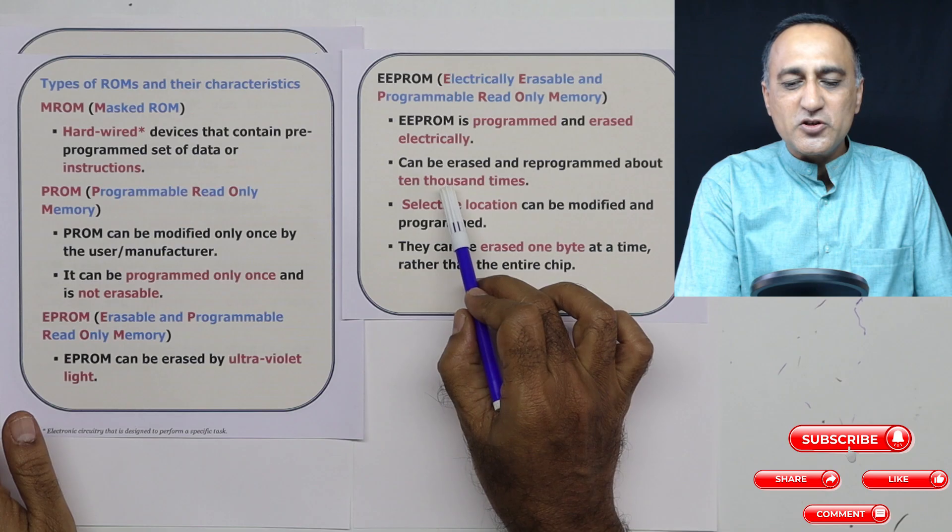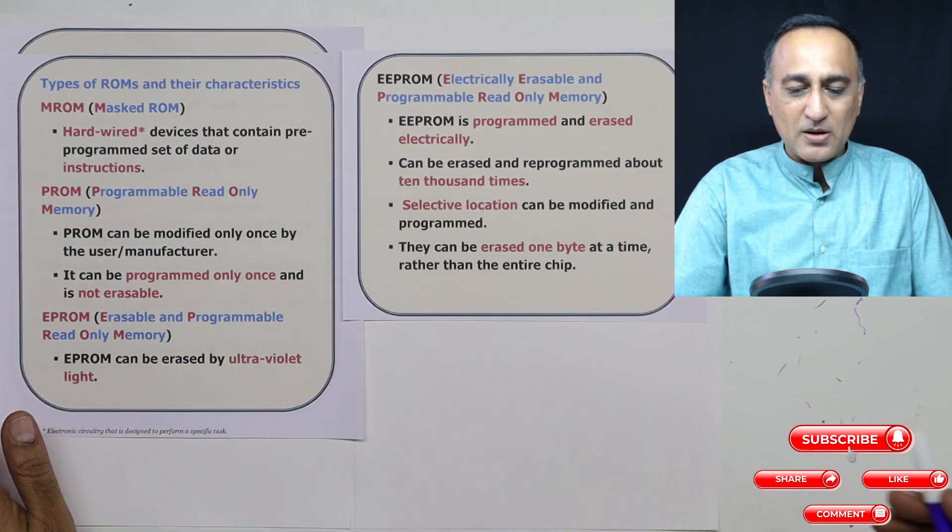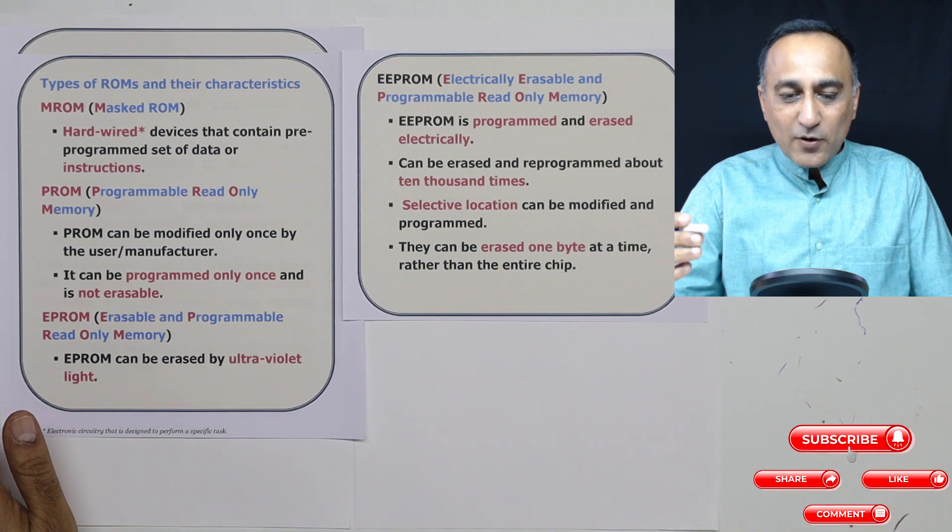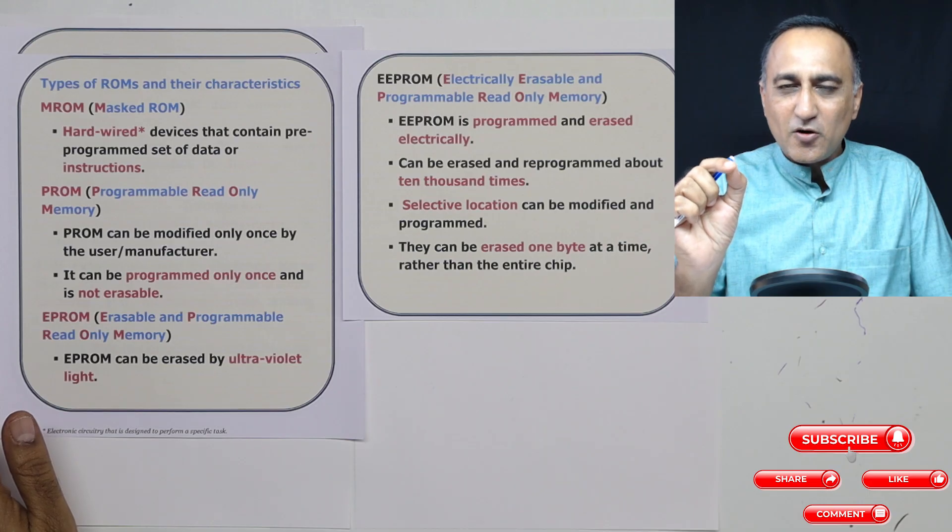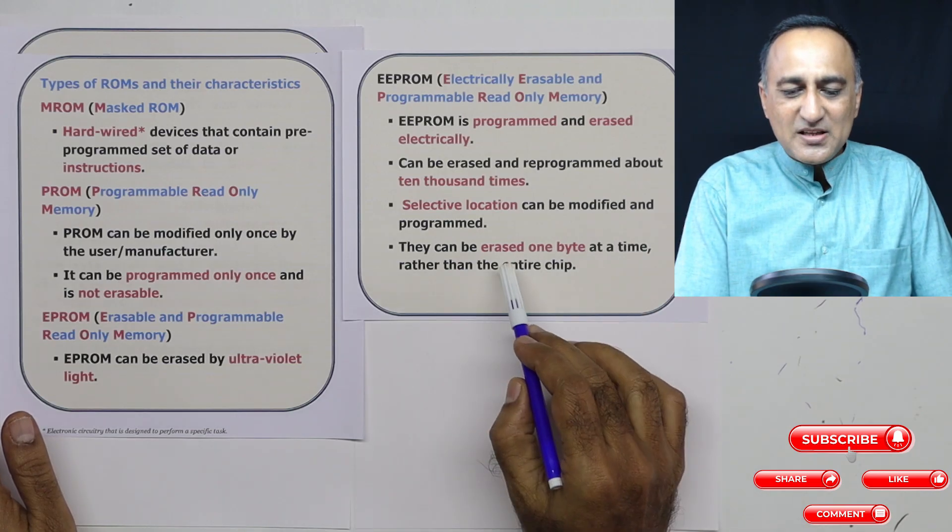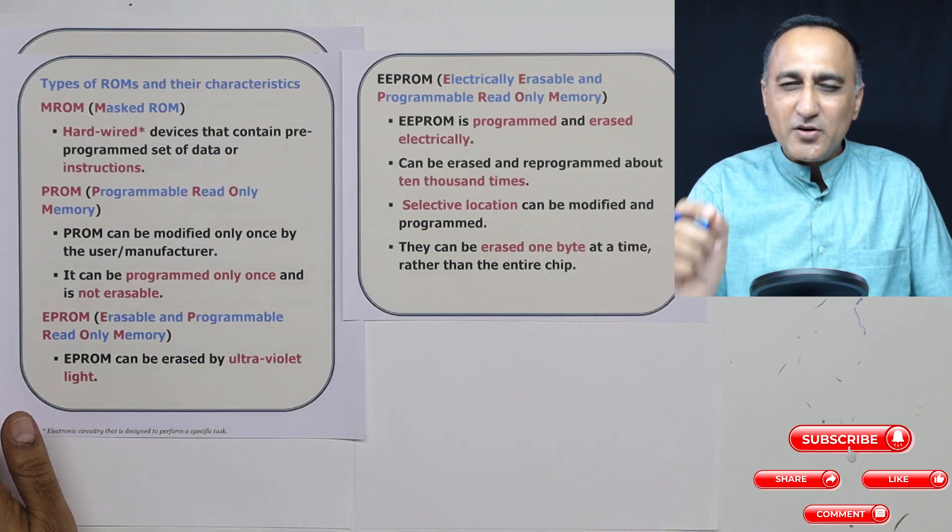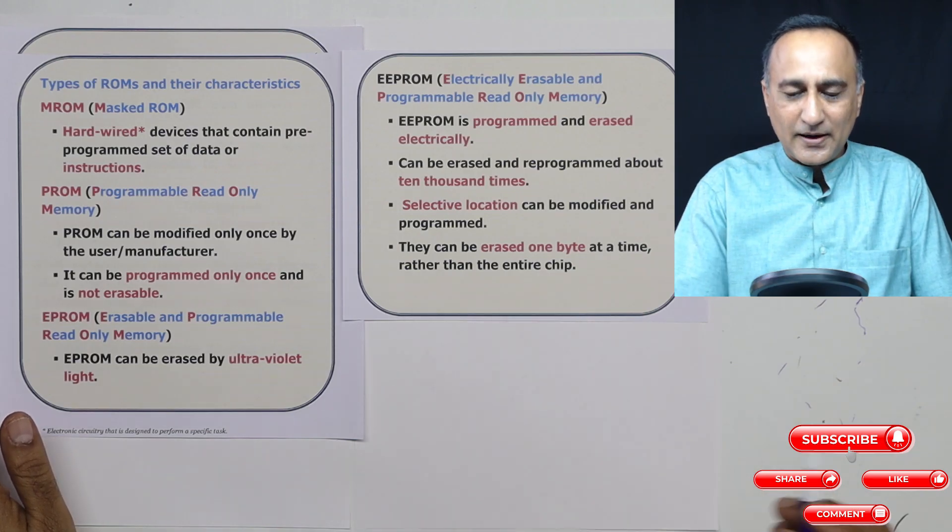Generally it allows you to program and change the contents of the memory about 10,000 or more number of times. The advantage of EEPROM is you can change just a small location or a small portion of the data without having to change the content of the entire chip. That means it allows you to modify even a very small area. Here, 8 bits is called one byte at a time.